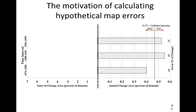This figure shows the annual land change in percent of the domain for each time interval. The 1971 to 1985 time interval has slow change, and the two latter intervals have fast change with respect to the annual uniform change. Our questions are: how much error in the map of change would it take to explain each interval's deviation from the uniform line?